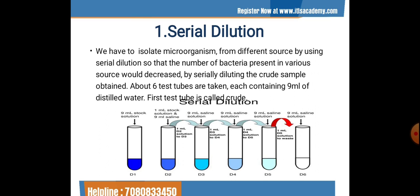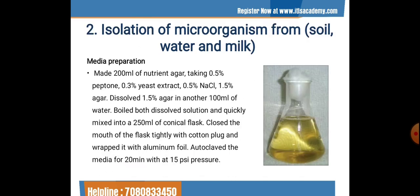In D2, 1 ml of stock solution is mixed with 9 ml of saline solution or distilled water. From this mixture, 1 ml is again taken and mixed into the third solution, D3. This addition of 1 ml from the previous test tube to the next is continued until we get the concentration level up to D6, with the dilution rate decreasing and the concentration of microorganisms reducing.